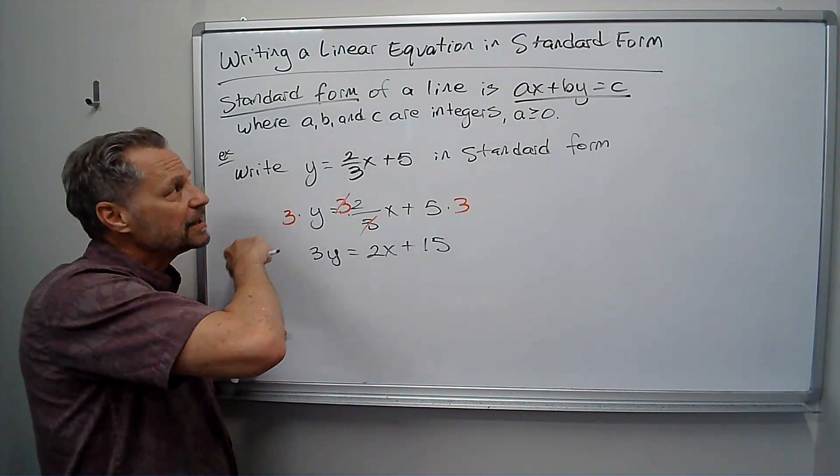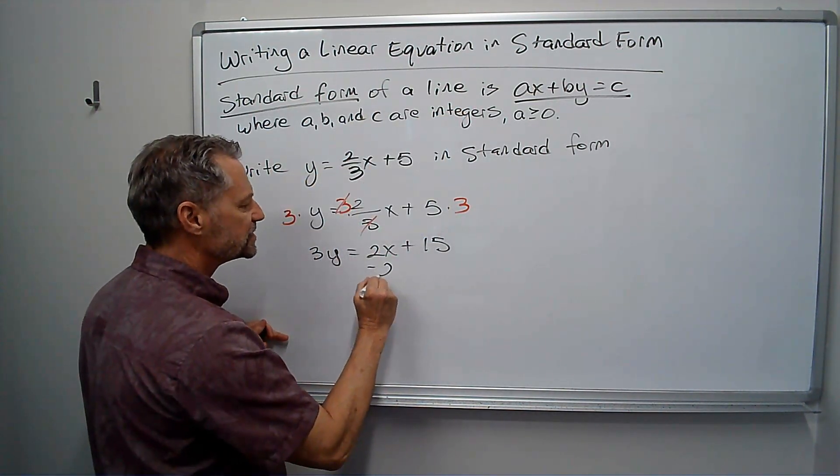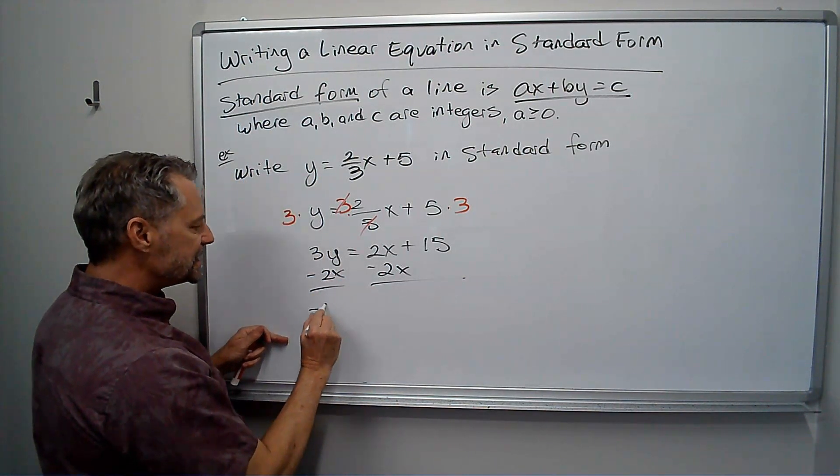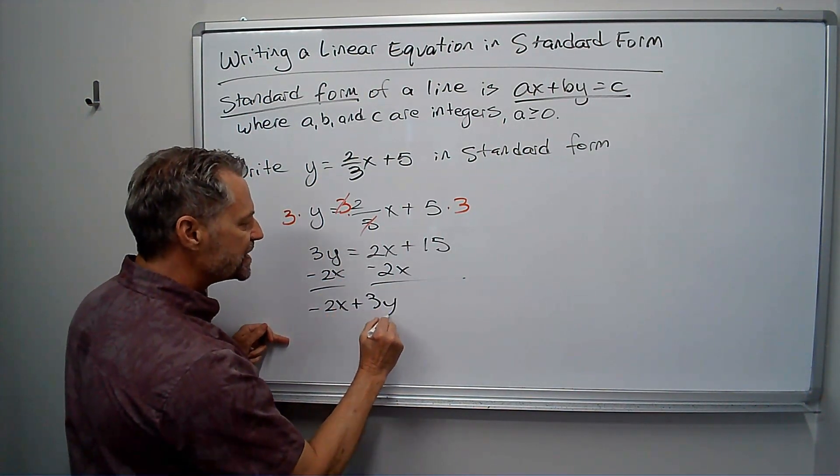Oh, the X has to be on the left because it has to be AX plus BY. So I subtract the two X, and I get negative two X plus three Y equals 15.